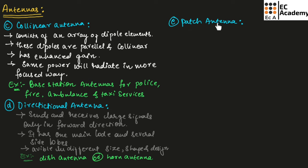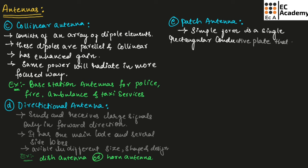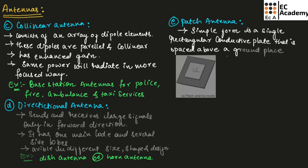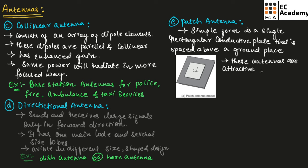Now let us understand the patch antenna. A patch antenna is a simple antenna consisting of a single rectangular conductive plate spaced above a ground plane. These antennas are attractive due to their ease of fabrication and are widely used in portable wireless devices.